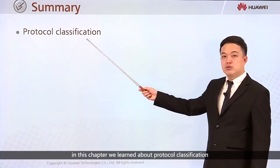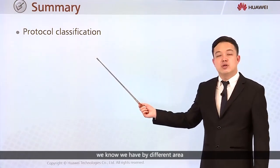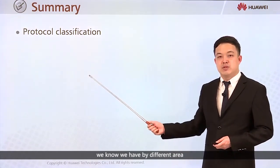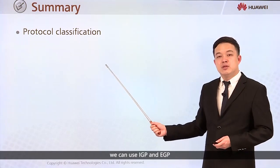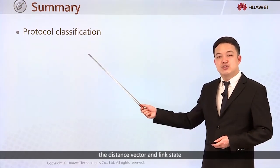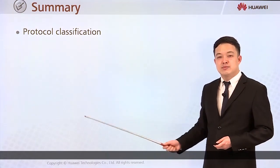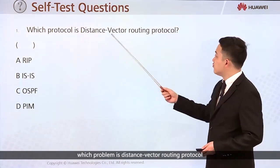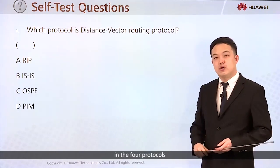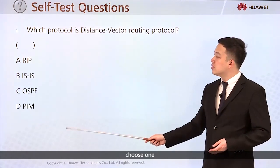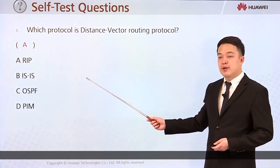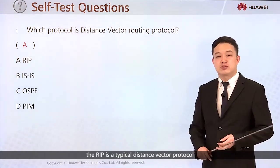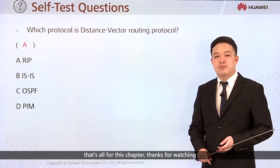In this chapter, we learned about protocol classification. By different working area, we can use IGP and BGP. By different algorithm, we have distance vector and link state. The chapter question is: which protocol is a distance vector routing protocol? Choose one from the four options. The answer is RIP — it is a typical distance vector protocol. That's all for this chapter. Thanks for watching.